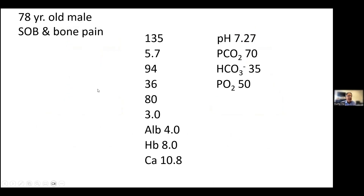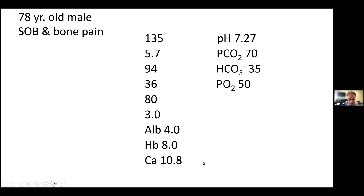Here's another patient — an elderly male with shortness of breath and bone pain. When you see CKD, anemia, and hypercalcemia, your number one diagnosis without doing anything else is multiple myeloma. If you see any patient in their 70s or 80s with CKD or AKI, anemia, and hypercalcemia — that's multiple myeloma until proven otherwise.